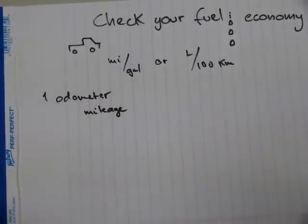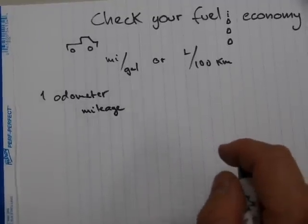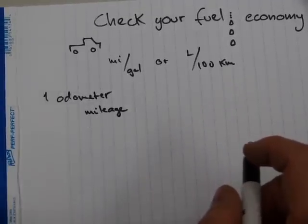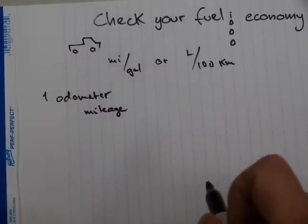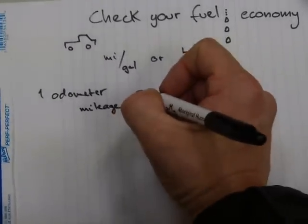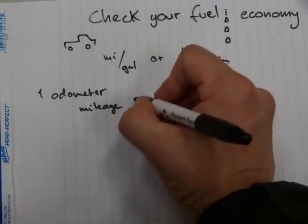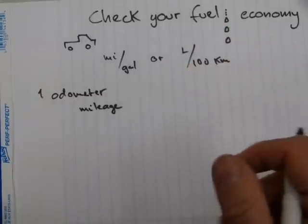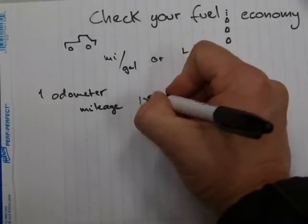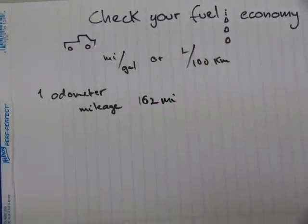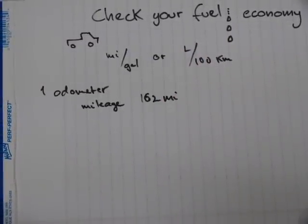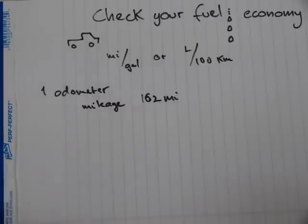Usually there is a little trip counter that displays the number of miles since last reset. Now, you have to make sure that you reset it when you fill up the gas tank. And between two fill-ups, say you recorded 162 miles between two fill-ups.